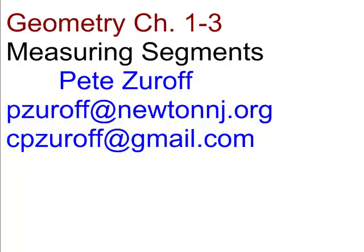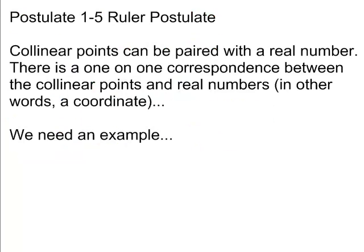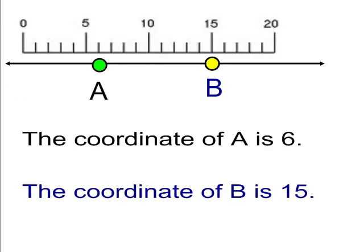Hi, this is Geometry Chapter 1-3. We're measuring line segments. We have postulate 1-5 called the Ruler Postulate. Collinear points can be paired with a real number. There is a one-on-one correspondence between the collinear points and real numbers. In other words, it's a coordinate, and we'll show you with an example.